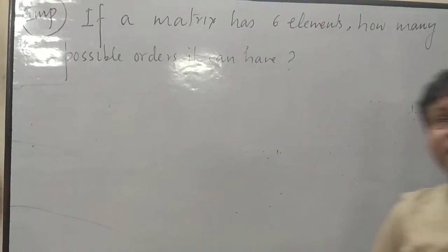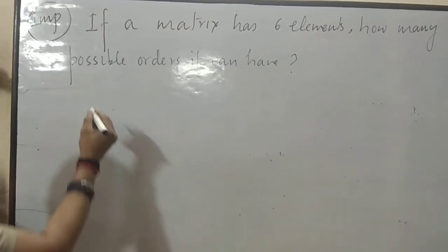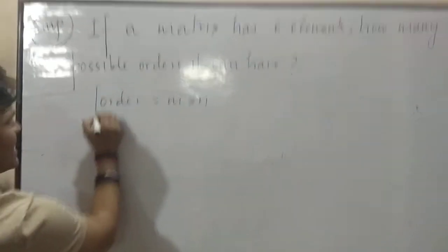If a matrix has 6 elements, how many possible orders it can have? Listen. Order we denote as M into N. I told you last class.